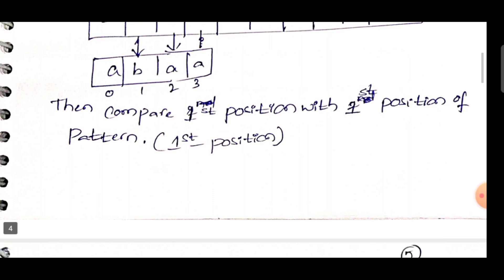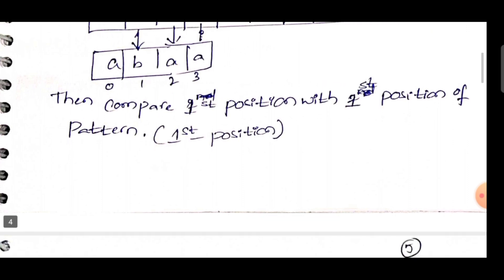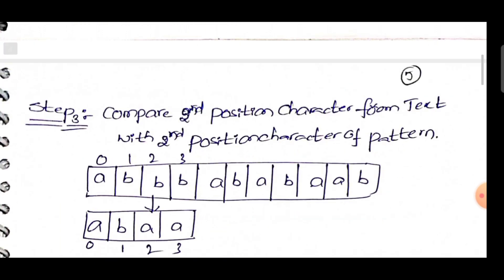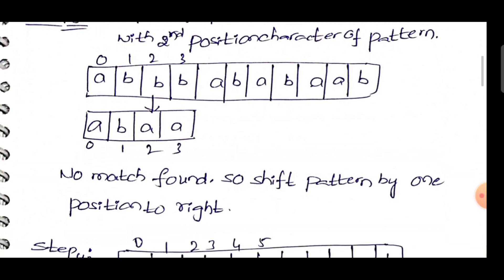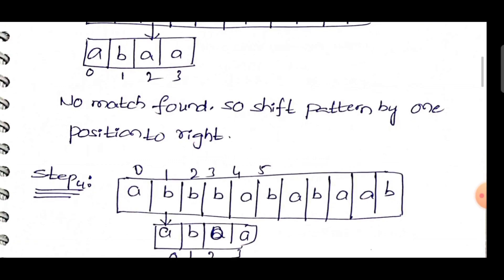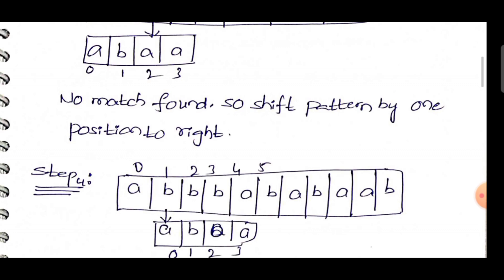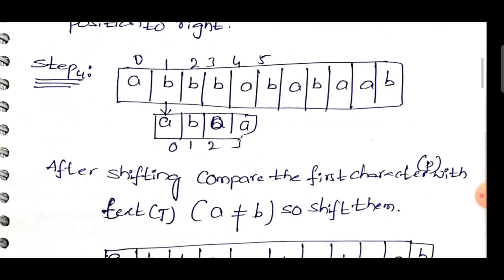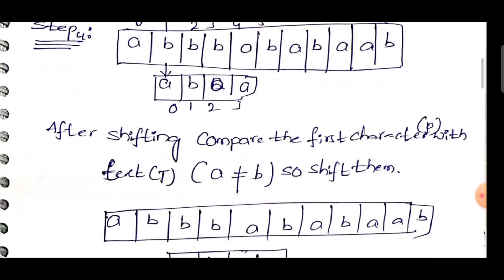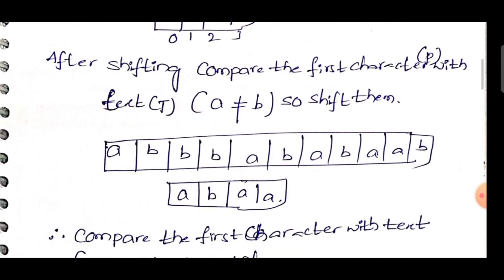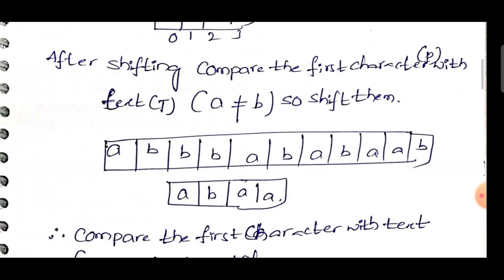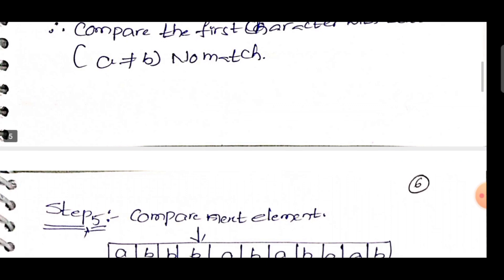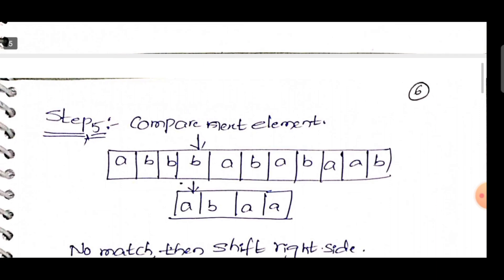We shift the pattern from position zero to position one and start comparison again. In step 3, we compare the second position characters — no match — then shift one position to the right. Now we compare A with B — A is not equal to B — shift one position right again. We compare A and B again — not equal — so we shift from the second position to the third position. Comparing the next element, A equals B — not matched — so we shift right again.